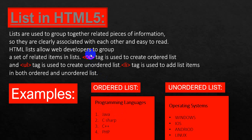HTML provides a tag called OL tag to create an ordered list. OL tag has certain attributes — mostly it uses three attributes: the first is 'type', the second is 'start', and the third is 'reverse'. If you want to create a list, you can create either an ordered list using OL tag or an unordered list using UL tag. OL stands for ordered list and UL stands for unordered list. This is the main container tag.